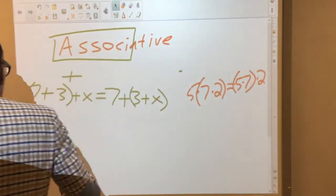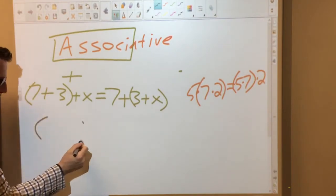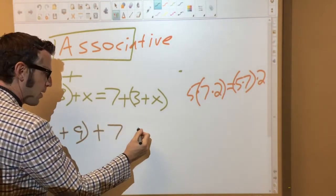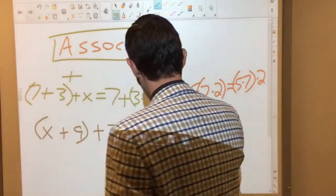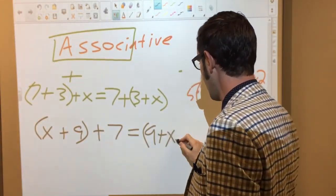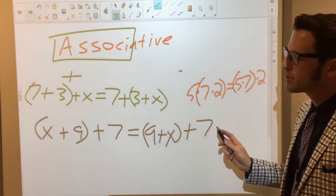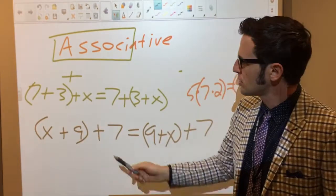Now you want to be careful, because people will sometimes see this, and say, oh, I see parentheses again, we must be talking about the associative property. But you'll notice in the associative property, the order doesn't change.